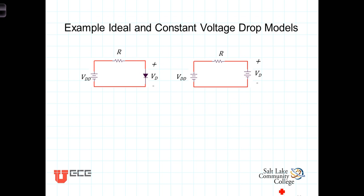Let's consider these two models in this example here. So we've got a voltage source, VDD, and a diode with a resistor in series for the diode that then serves to limit the current and the voltage of the diode.